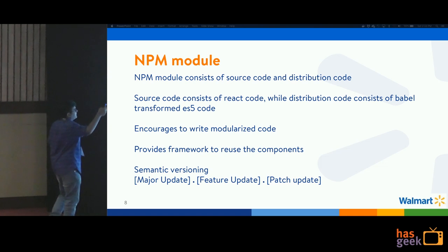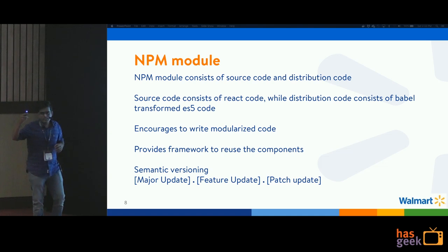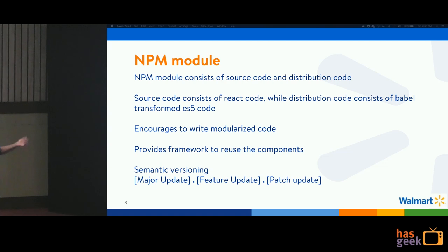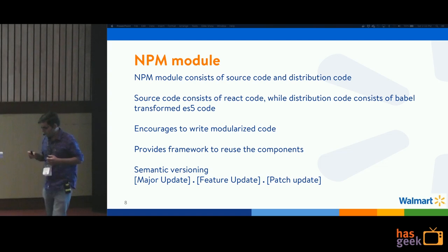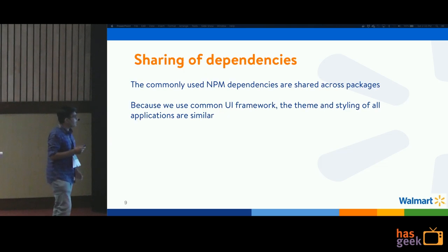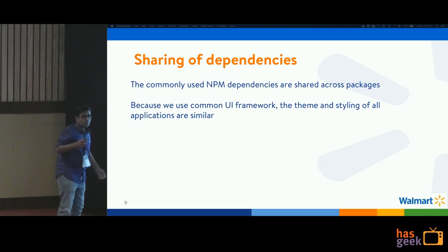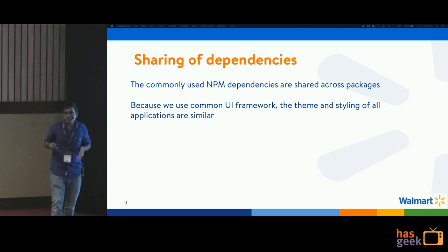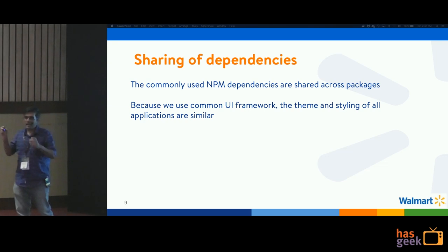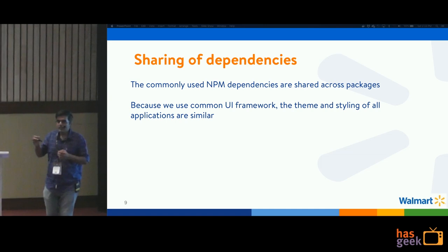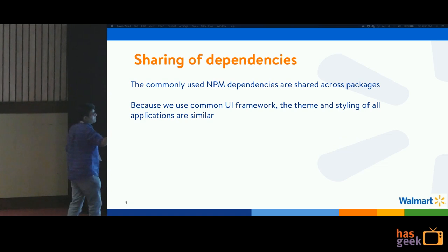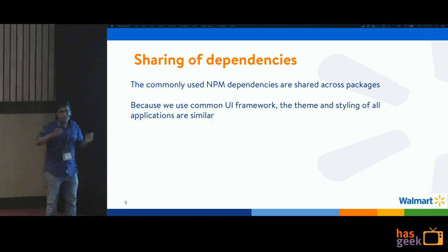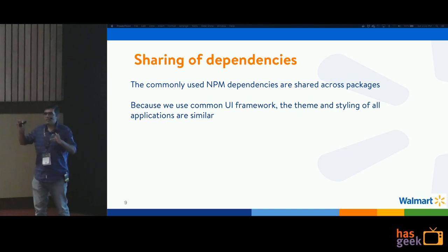Our npm module consisted of the usual source code and the distribution code. The source code was written in JSX React, while the distribution code was ES5 code transformed by Babel. Another advantage of using npm is that dependencies between packages can be shared. If the main application has one UI framework dependency, all child applications are going to use the same one, giving you consistent styling and theming across all applications inside the portal.